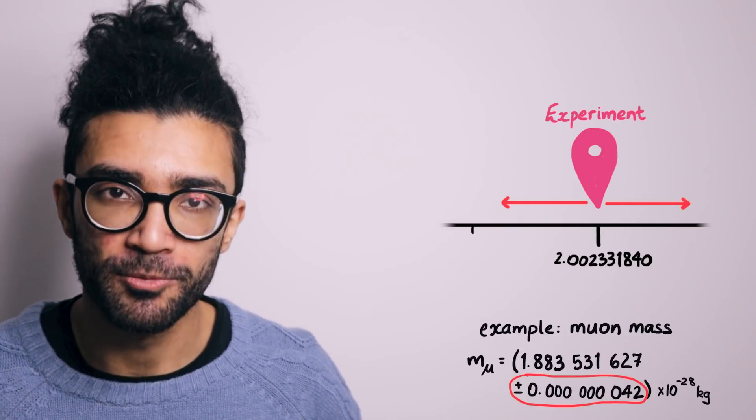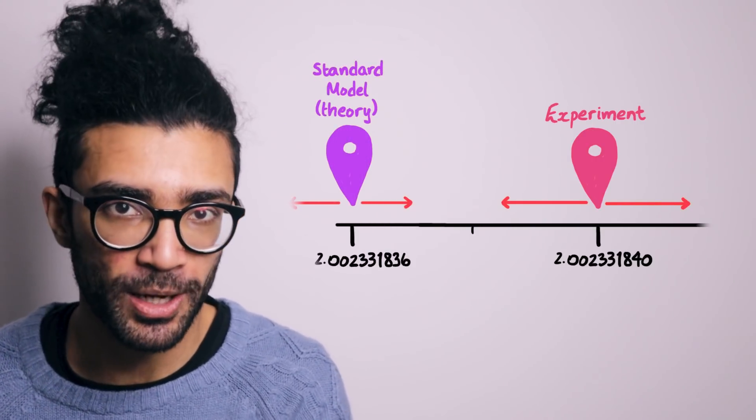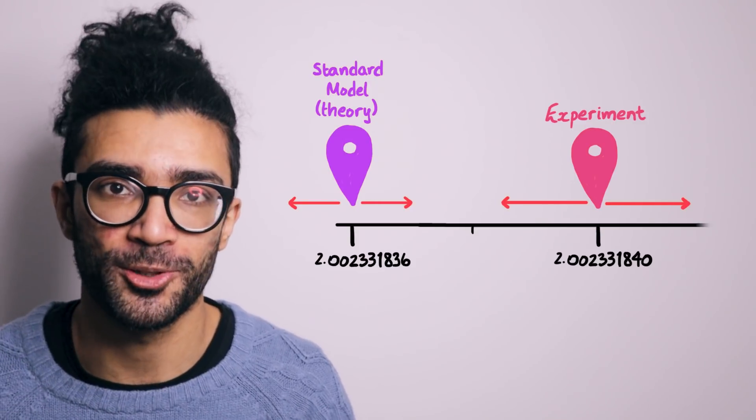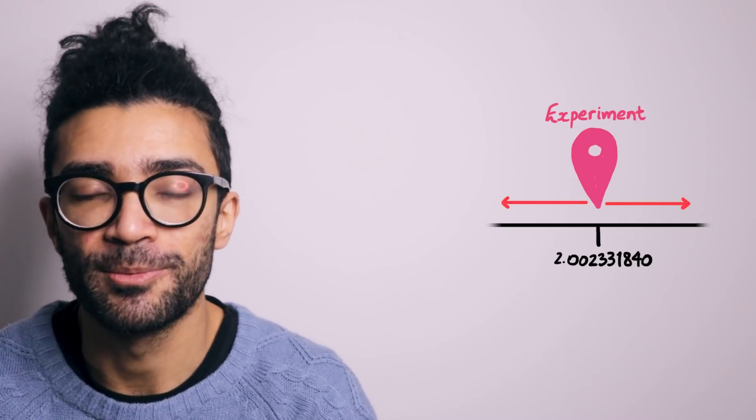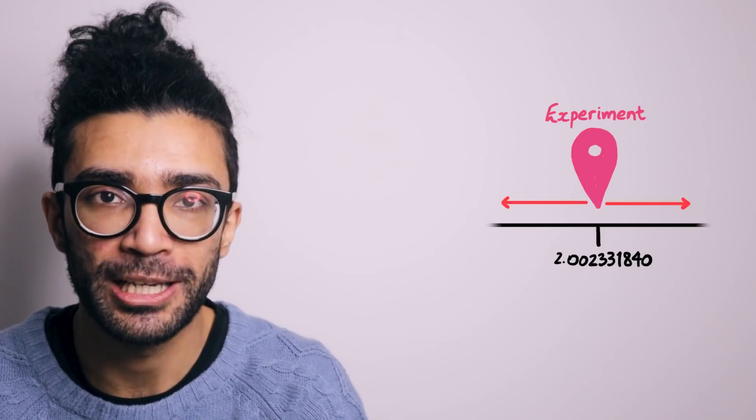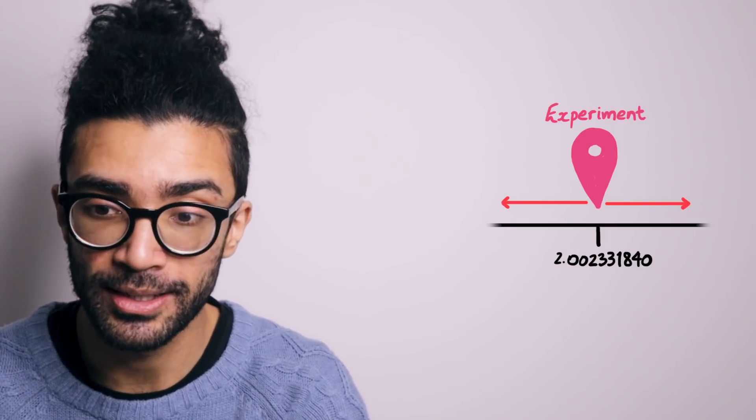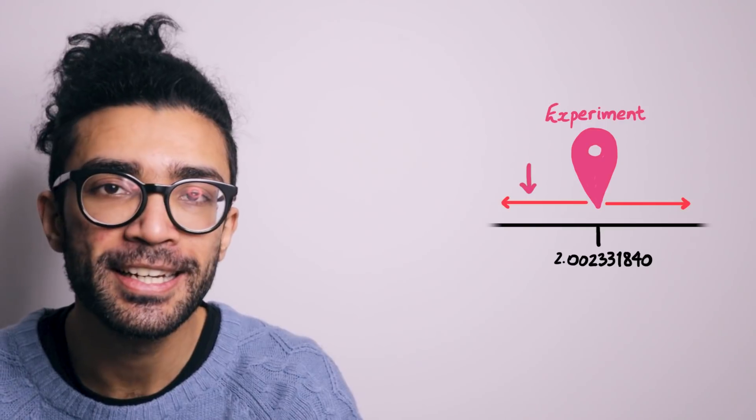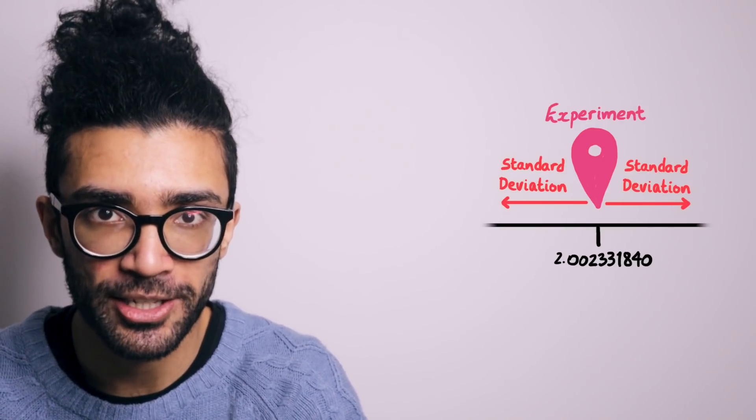Now, you can also find a similar range for the theoretical calculations as well. But for our purposes, let's just focus on the experimental one. This quantity, the range within which our experimental value can reasonably lie, either higher than what we calculated or lower than what we calculated, is known as a standard deviation.